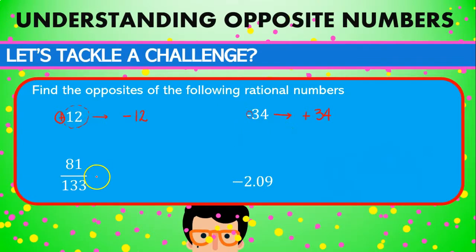Now we have 81 divided by 133. Even if it's a complex fraction, we already know that it's positive, so the opposite has to be negative. And again, the same exact number.